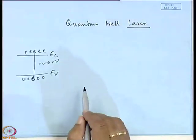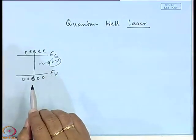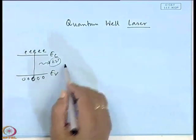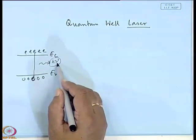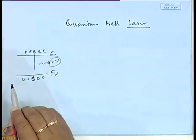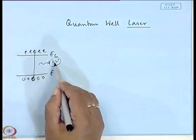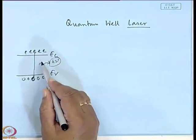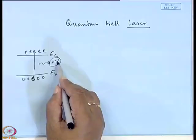For a laser, stimulated emission is required. The energy of emitted light is hν, where h is Planck's constant and ν is the frequency. In spontaneous emission, many different frequencies ν₁, ν₂, ν₃… are emitted. If you plot intensity versus wavelength for an LED, you get a broad spectrum with a large full width at half maximum (FWHM), equal to λ₂ − λ₁.